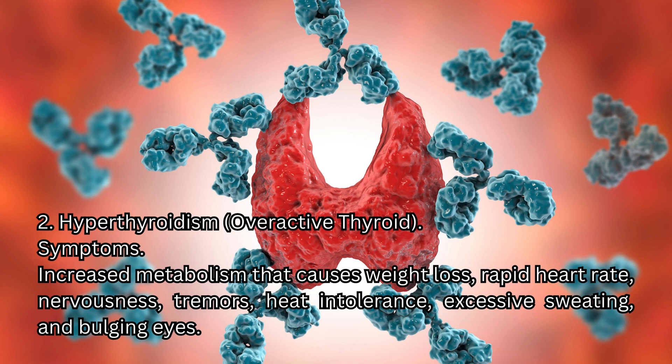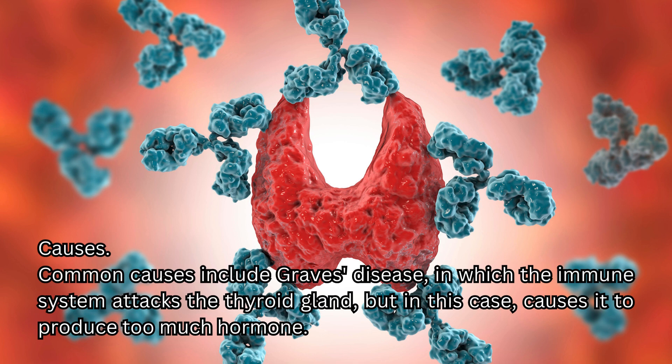The second type is hyperthyroidism, or overactive thyroid. Symptoms include increased metabolism that causes weight loss, rapid heart rate, nervousness, tremors, heat intolerance, excessive sweating, and bulging eyes. Common causes include Graves' disease, in which the immune system attacks the thyroid gland but in this case causes it to produce too much hormone.